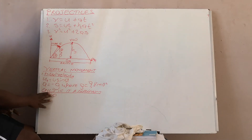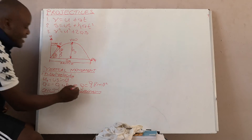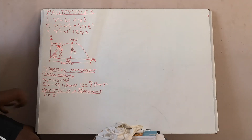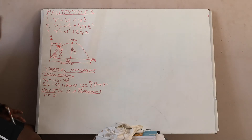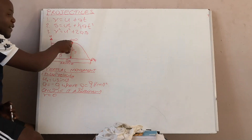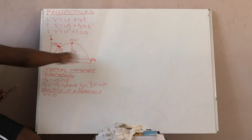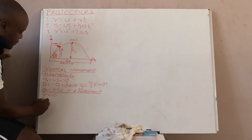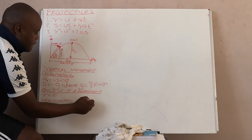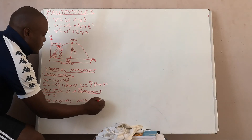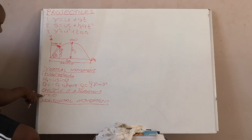This final velocity of zero only applies if it is a maximum, meaning the object reaches the turning point. If the object stops before reaching the turning point, V is not zero unless stated. If they say the object falls back to the surface, it has passed through a maximum and you can use V equals zero for the upward vertical movement. These are the three important principles for vertical movement.